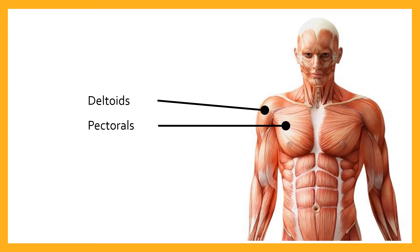In the chest, we've got the pectorals — the pectoralis major and the pectoralis minor just underneath — but we'll loosely refer to these as the pectorals or pecs. In the upper arm, we've got the biceps brachii; brachii simply means 'of the arm,' which distinguishes it from other biceps muscles we'll see later.